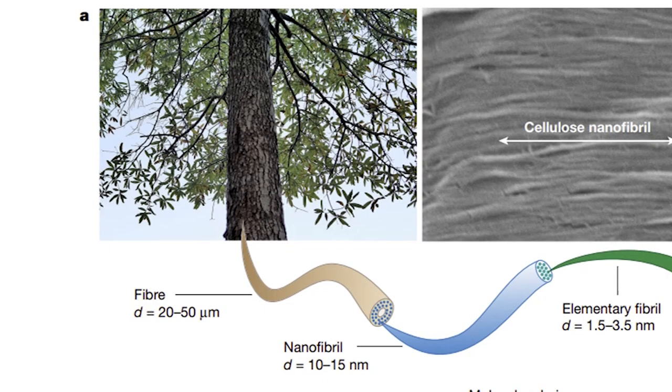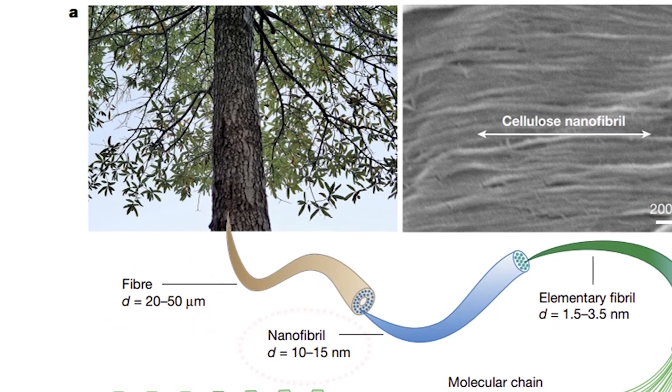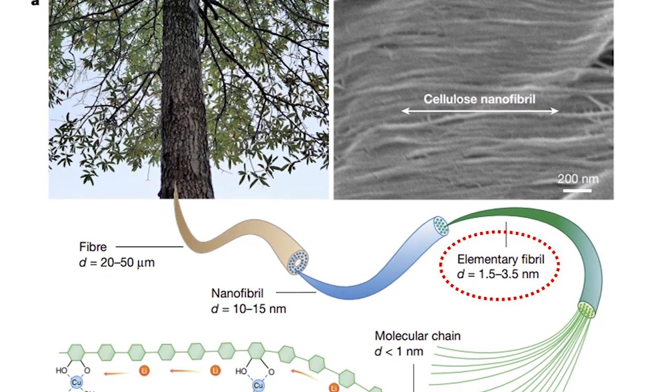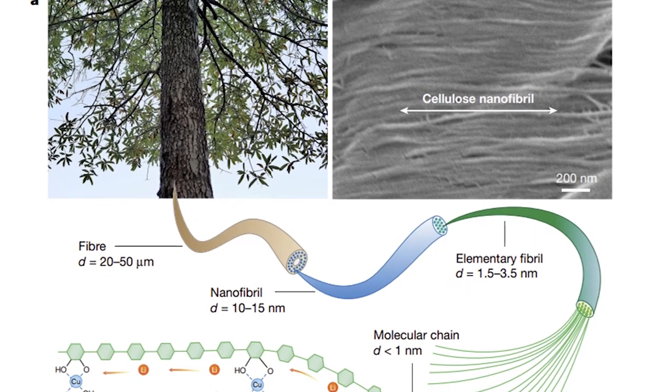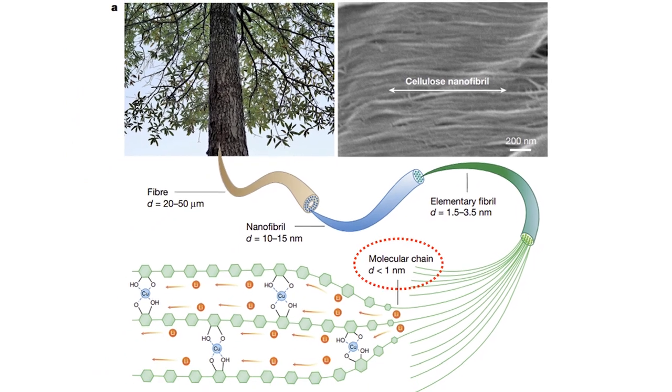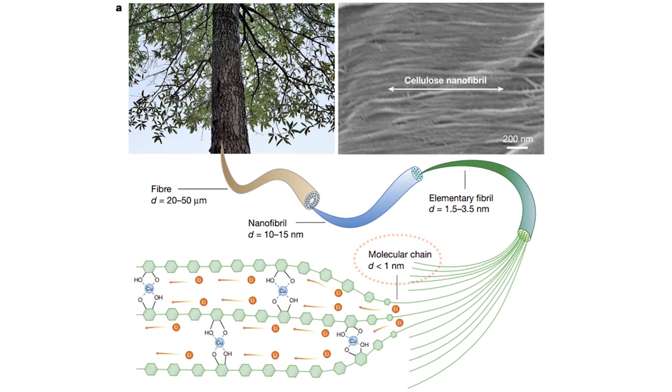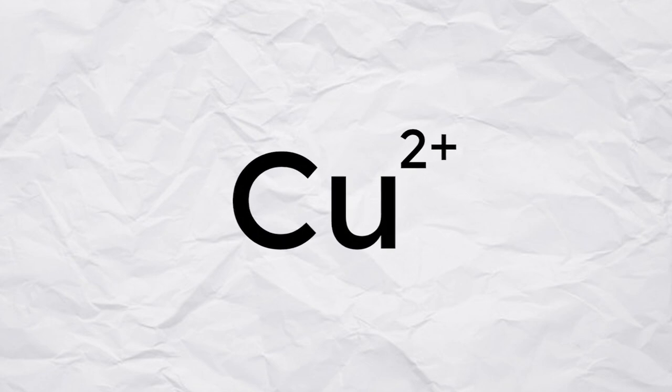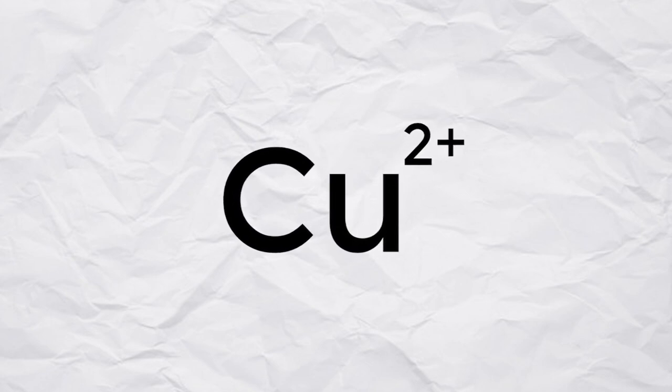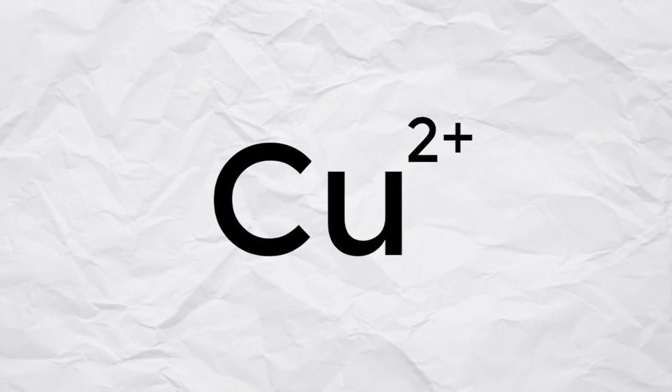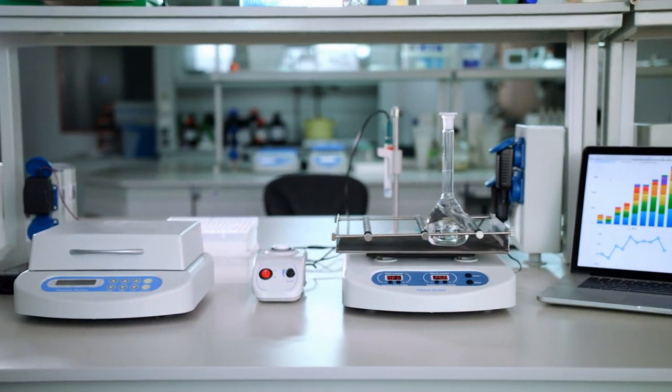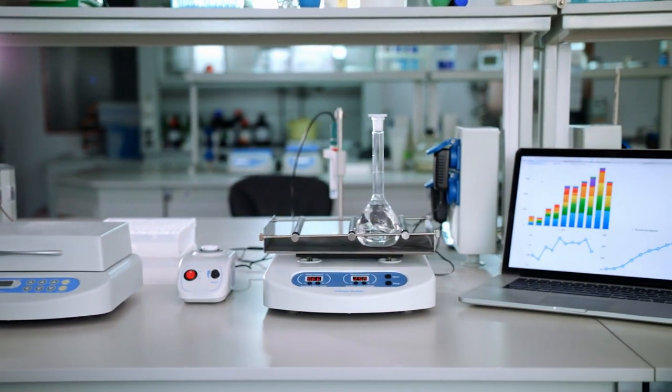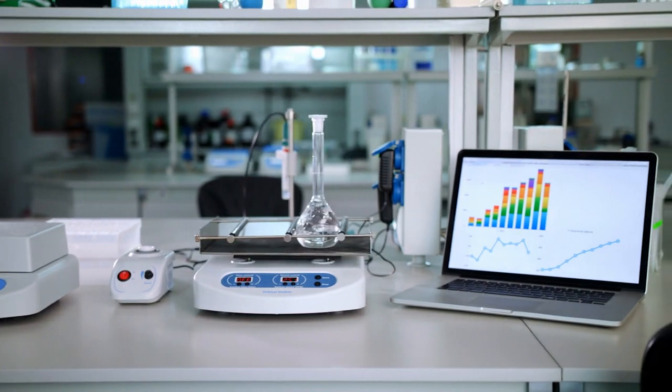They then turned this into the more scientific sounding cellulose fiber. These fibers are then separated down into smaller nanofibrils and elementary fibrils, which contain the all-important molecular chains. It is at this point the magic ingredient comes in. This magic ingredient is a copper ion carrying a double positive charge.